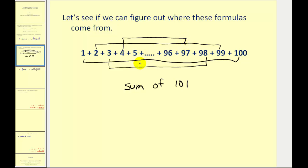And the question becomes how many 101's would we have? Well if there are 100 terms and we're making groups of two that will leave us with 50 groups of 101. So the sum of all of these terms would be 50 times 101 which is equal to 5050.